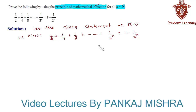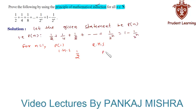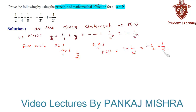Now we'll check whether the given equation holds true for n = 1. For n = 1, we have P(1) on the left hand side as 1/2, whereas on the right hand side P(1) equals 1 minus 1/2^1, which is equal to 1 minus 1/2, that is 1/2. Since we have the same value for both LHS and RHS, therefore P(1) is true.